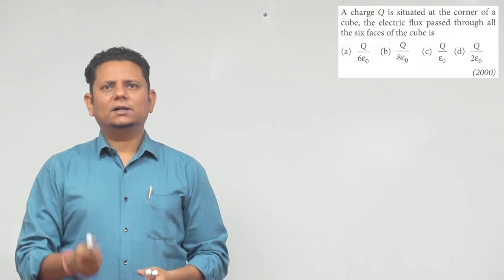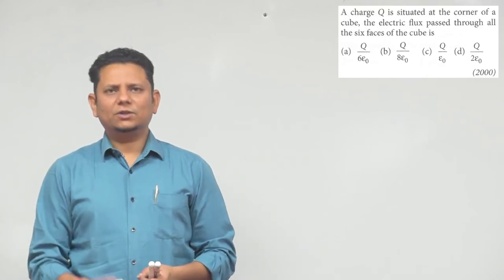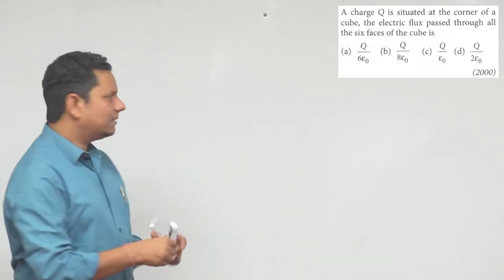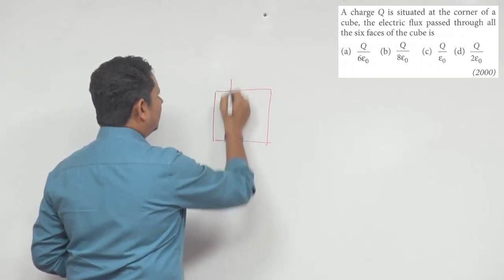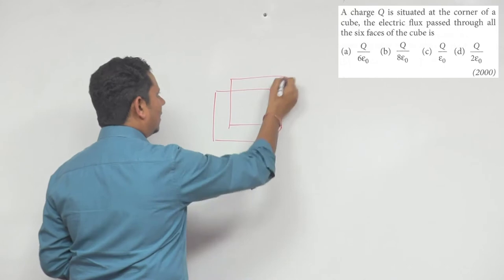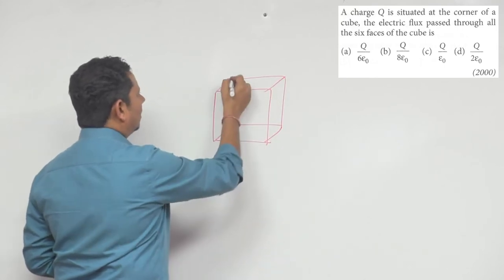Next question. The question says a charge Q is situated at the corner of a cube, the electric flux passed through all the six faces of the cube will be. Again simple, so we'll use Gauss law. So this is your cube, and on this cube we have the charge at one corner.